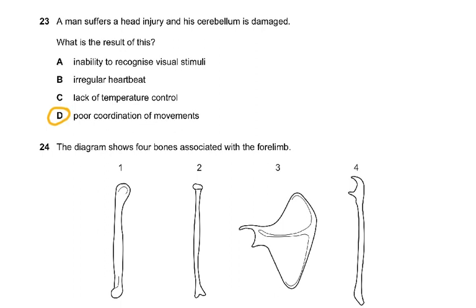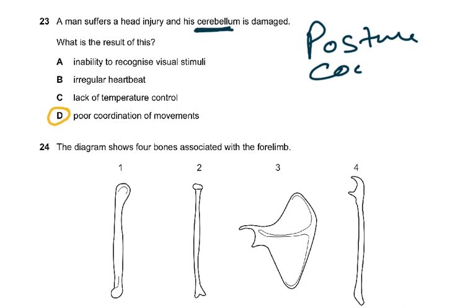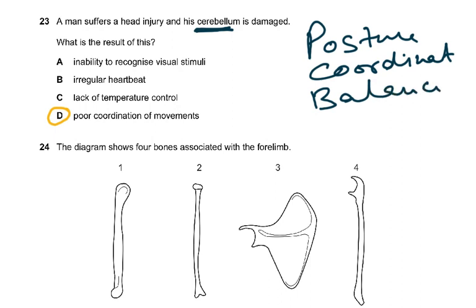Question 23: a man suffers a head injury and his cerebellum is damaged. The cerebellum controls posture, coordination, and balance — PCB. I always tell you to remember it as Pakistan Cricket Board. Very simple: posture, coordination, and movements.